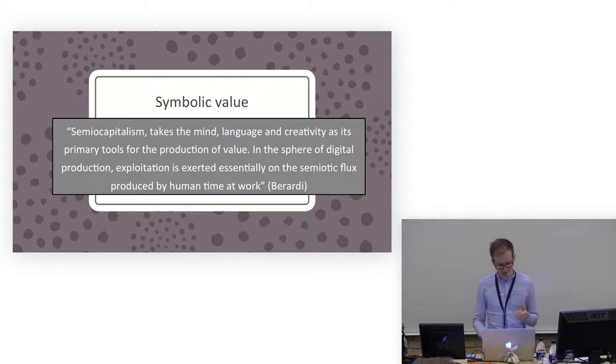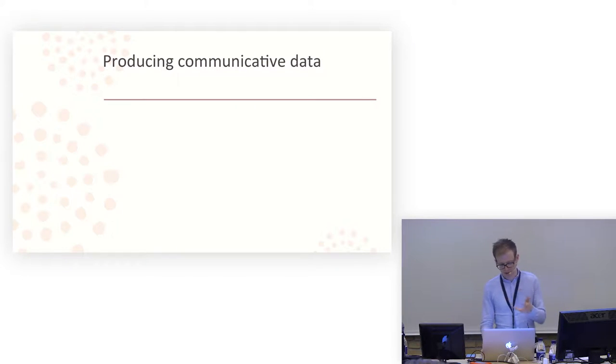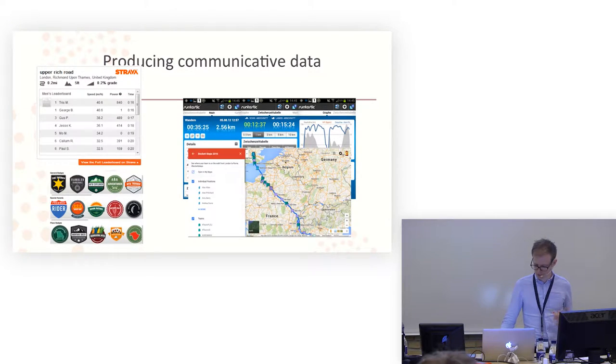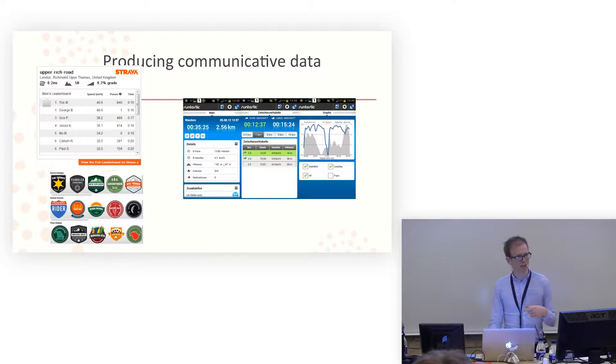And I contextualize this in the insight from Franco Berardi. He suggests that now we're in a state of semi-capitalism, which takes the mind, language, and creativity as its primary tools for the production of value. In the sphere of digital production, exploitation is exerted essentially on the semiotic flux produced by human time at work. So all kinds of self-tracking, including the ones, the workplace ones I'm talking about, produce symbols, data, as people have already talked about, such as these kinds of things that produce, generate Strava badges like this and produces data on you.